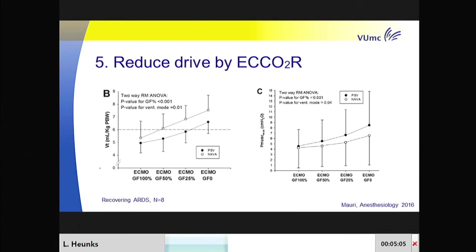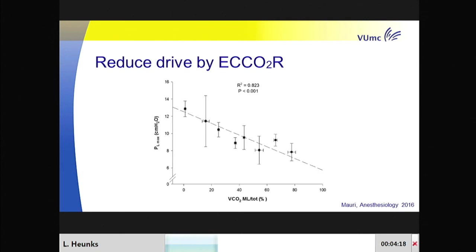Finally, a good way to modulate respiratory drive is ECMO. Nice data published in Anesthesiology from Maori showed that in patients on NAVA or pressure support ventilation, the higher the ECMO gas flow, the lower the tidal volume and the lower the pressure developed by the inspiratory muscles—the lower the P0.1. The more CO₂ cleared by ECMO, the lower the transpulmonary pressures. It's a very nice way to modulate respiratory drive.